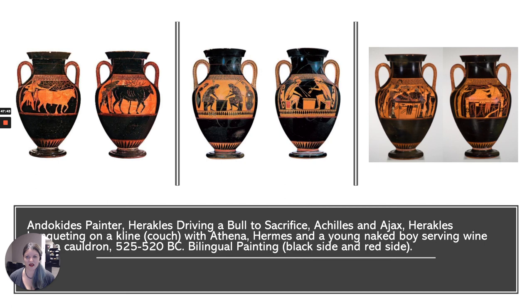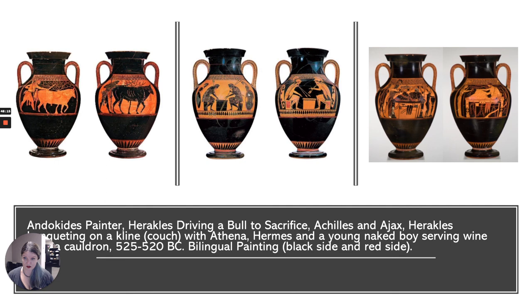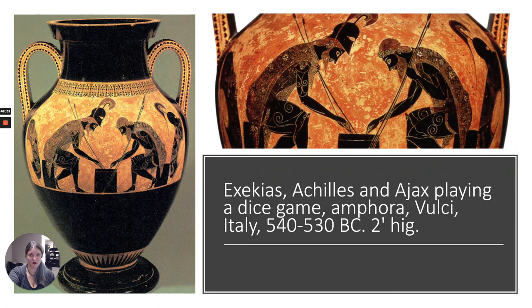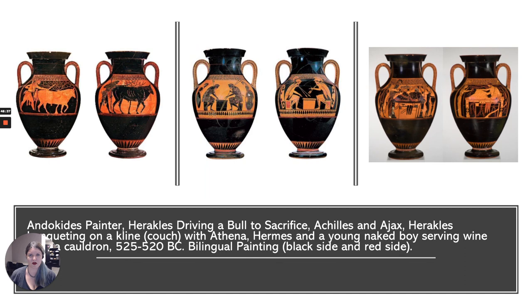Then we have the painter Andokides, who is pretty neat. On each of these images — the front and back of a pot — the images are the inverse of each other, the same image. But on one side the figures are painted in red, and on the other they're painted in black. This was called bilingual painting. This was considered the height of sophistication in pottery painting at this time. Quite a few of these exist from this painter, they're signed, and they're in pretty good condition. In the middle here is that same motif — Achilles and Ajax playing a dice game — copied from Exekias.